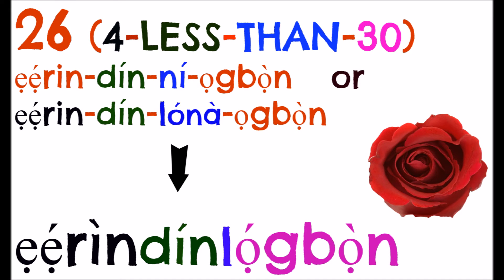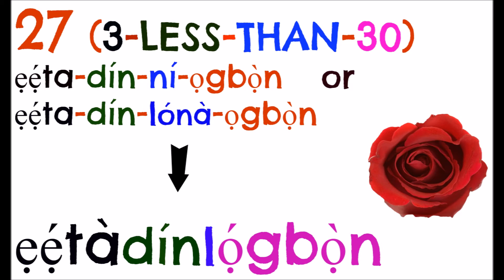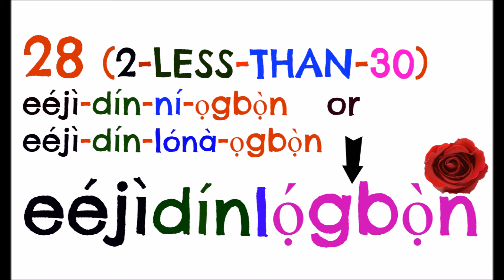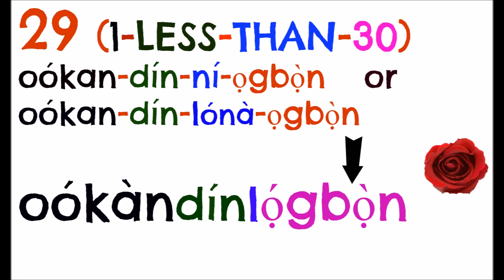Twenty-six is 'four less than thirty.' Twenty-seven is 'three less than thirty.' Twenty-eight is 'two less than thirty.' Twenty-nine is 'one less than thirty.' And as we might have noticed, thirty is 'ogbon.'